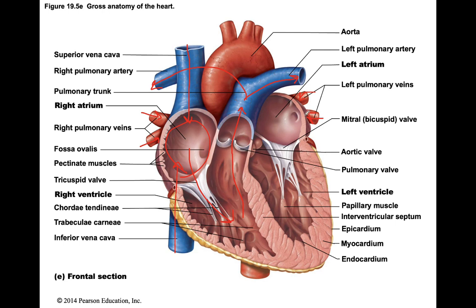All four pulmonary veins dump that newly oxygenated blood into the left atrium. The left atrium pumps that blood down past the bicuspid valve — also known as the mitral valve — into the left ventricle. The left ventricle shoots that blood out of the aortic semilunar valve to leave out of the aorta, sending blood out of the brachiocephalic artery, left common carotid artery, and left subclavian arteries. You should listen to that over and over again until you're confident enough to teach that blood flow pathway to somebody else.